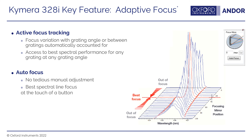Adaptive focus is another feature in the Chimera 328. It automatically adjusts the focusing mirror position such that the best focus of the spectrograph is always achieved, accounting for differences in grating angle or focus when switching gratings or turrets, and also when switching between different input or exit ports. It's completely automated — no manual adjustment needed. It gives you the best spectral line focus automatically at the touch of a button, greatly enhancing the versatility of the Chimera 328.